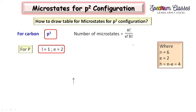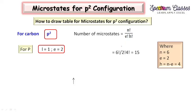H is the number of holes, calculated by subtracting 6 minus 2, giving us 4 holes — these are the vacancies in the P orbital. Putting all values into the formula: 6 factorial divided by 2 factorial times 4 factorial. Writing this out: 6 × 5 × 4! divided by 2 × 1 × 4!. The 4 factorials cancel, and simplifying gives us 15 microstates.